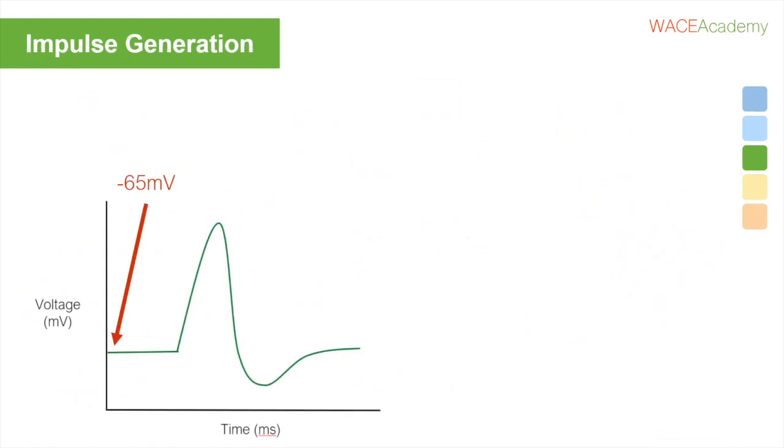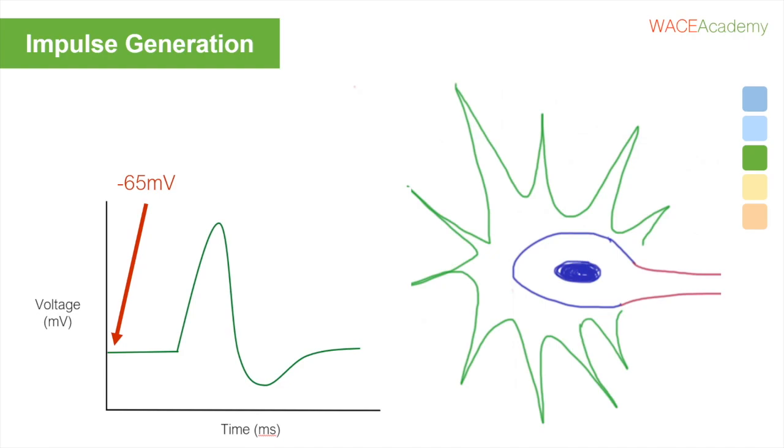If enough ions of a particular charge are moved into or out of a dendrite, then the net charge of the dendrite will change. If the change is big enough, it will cause the action potential to begin.